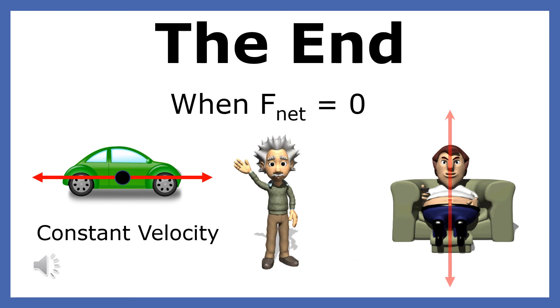Let me summarize what you've learned. Newton's first law describes what happens to the acceleration of a body when the net force is zero. When the net force on an object is zero, it will move with constant velocity or remain at rest. This is the end of my presentation on the first law of motion.